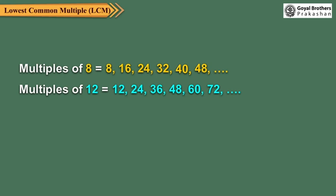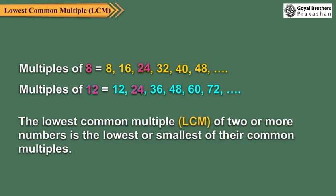Here, the lowest common multiple of 8 and 12 is 24. So, the lowest common multiple of 2 or more numbers is the lowest or smallest of their common multiples. The lowest common multiple is also written as LCM.